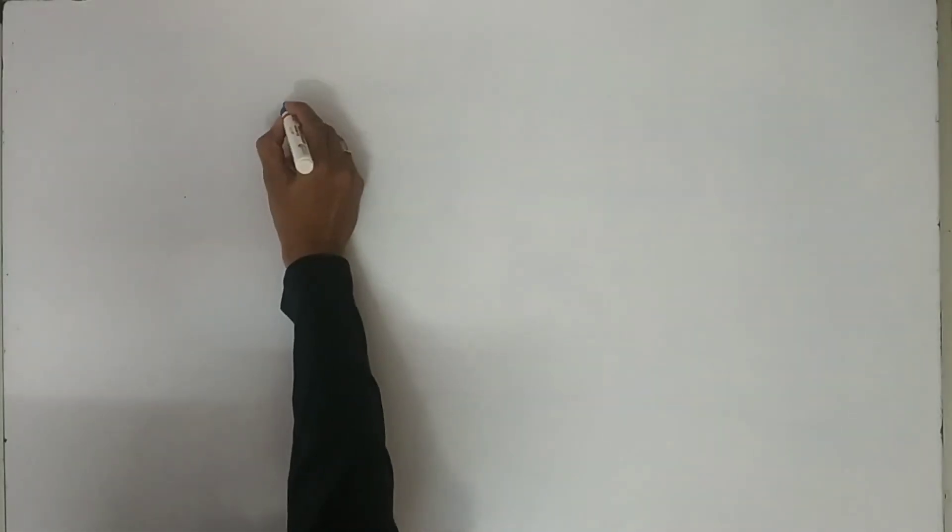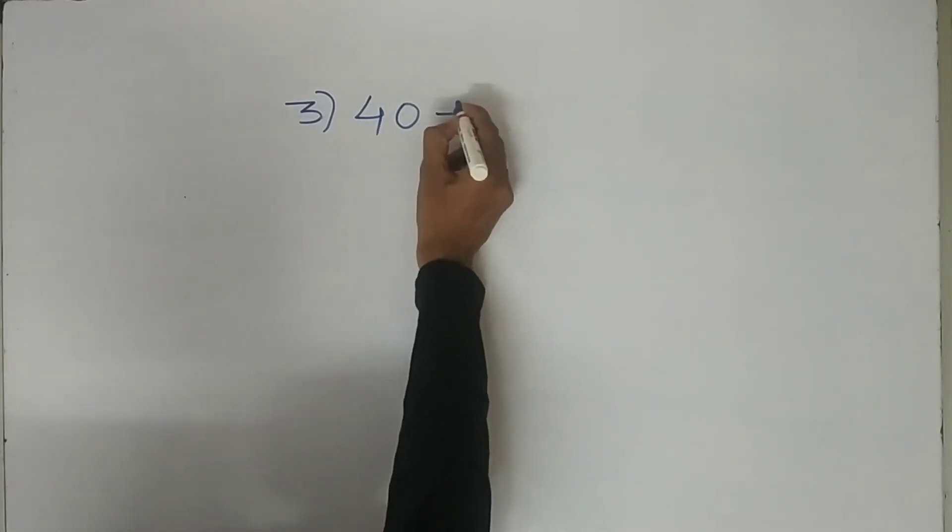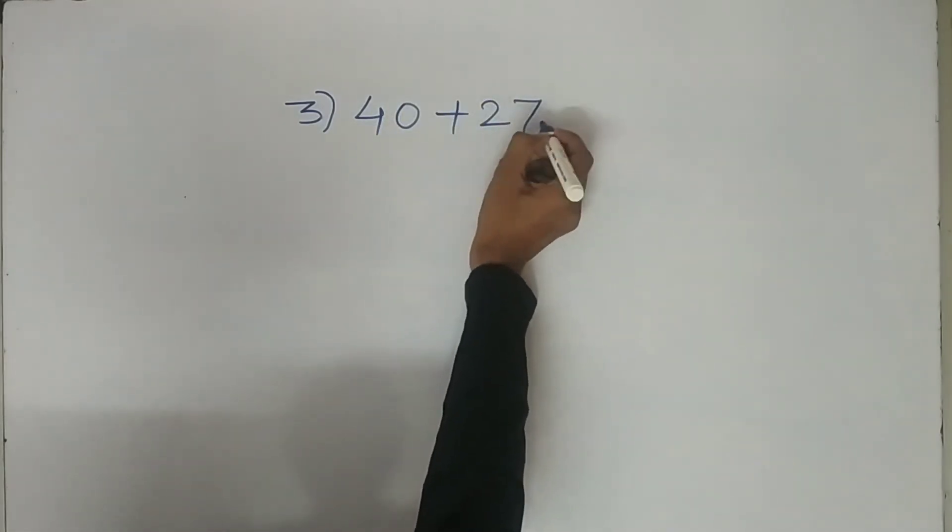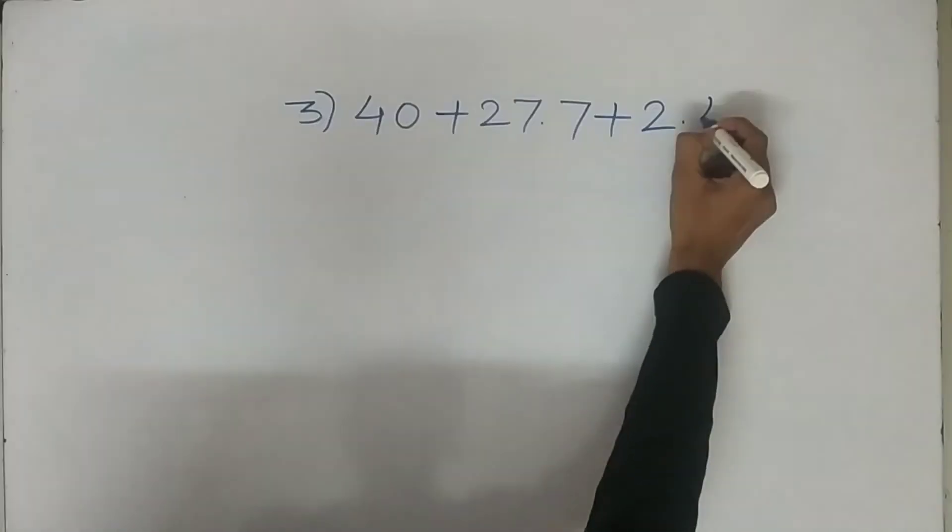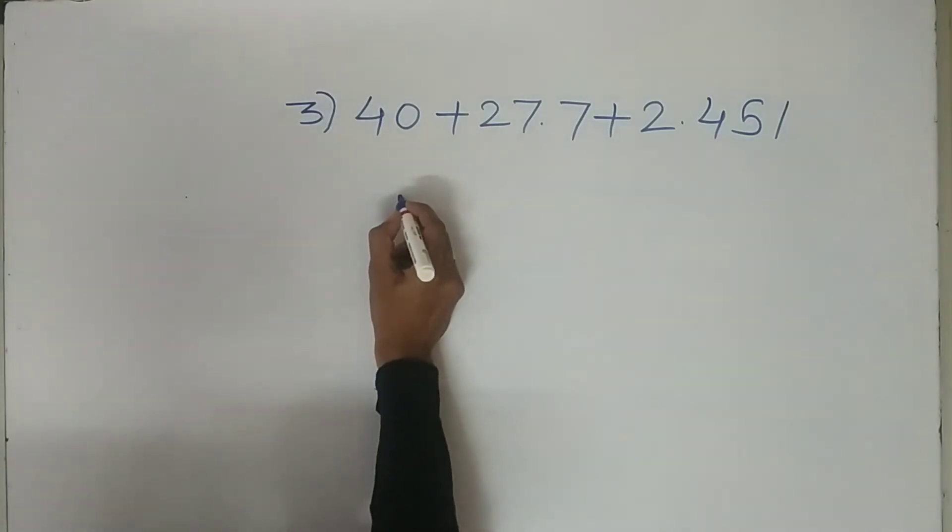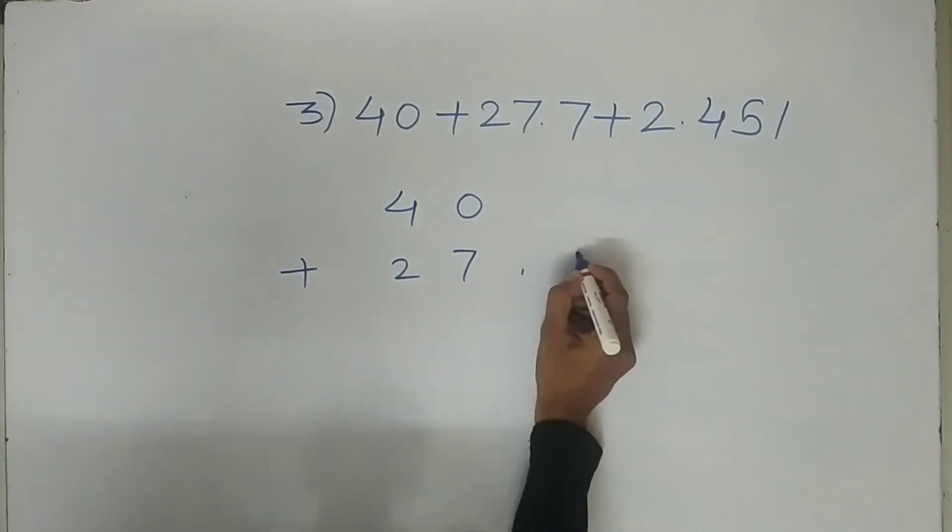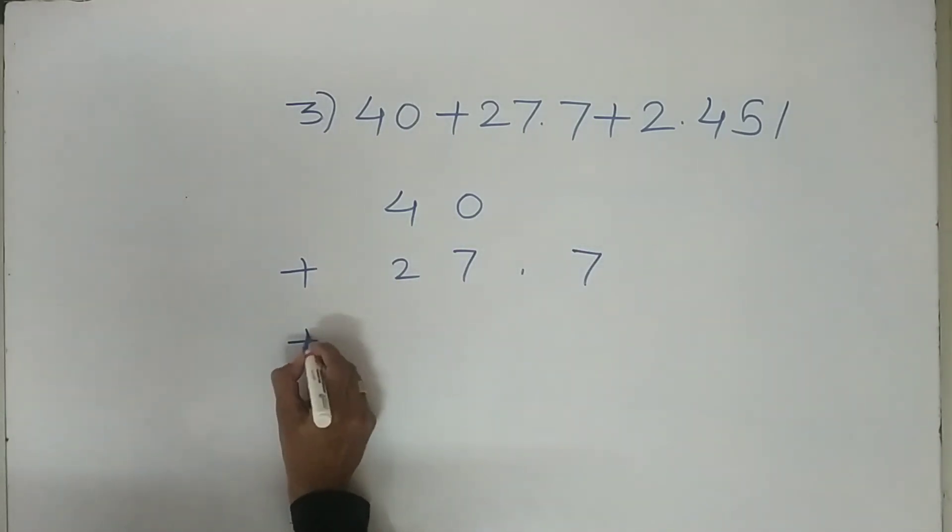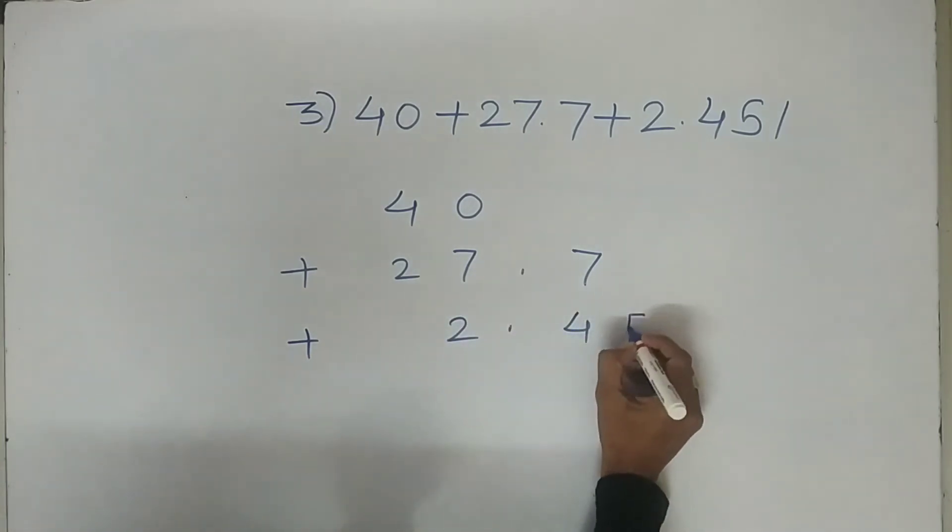Example number three: forty plus twenty seven point seven plus two point four five one. Let's add all numbers: 40 plus 27.7 plus 2.451.